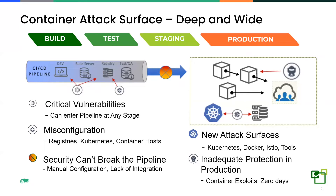The new attack surfaces include Kubernetes, Docker runtime, and service meshes like Istio — all of which are also targets for attackers. We've seen critical vulnerabilities discovered across this spectrum of Kubernetes, Docker, Istio, and all the cloud-native infrastructure. This is really an additional headache for security experts to worry about.